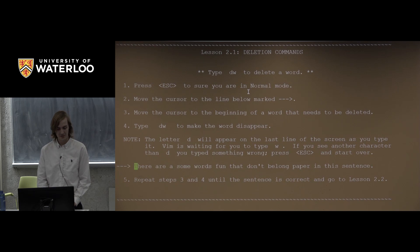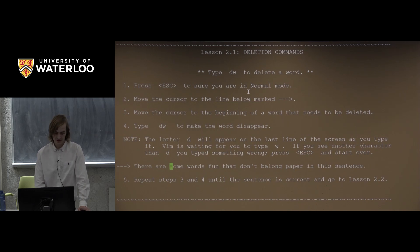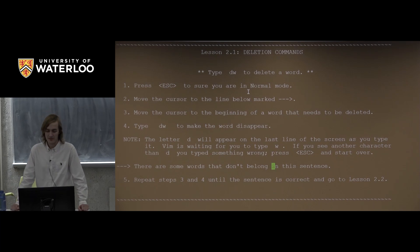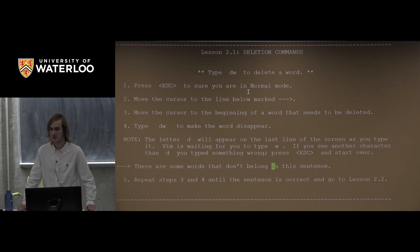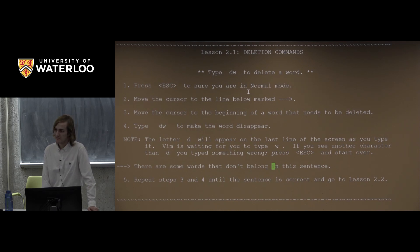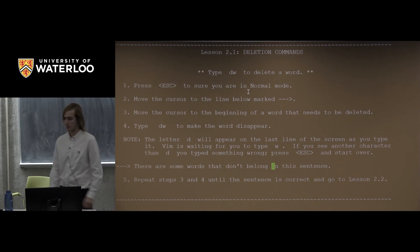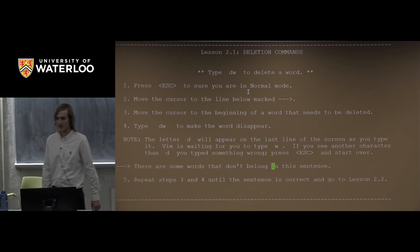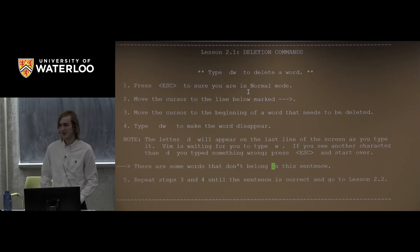So going down to a practice sentence, we want to delete all the words that don't fit. Using DW we can delete the extra words one by one, fixing the sentence without ever having to go into insert mode — which is important. And another strange thing: in Vim you never have to use the backspace key. Really all your deleting should be done from normal mode. I might even go so far as to say the backspace key is not proper Vim, though I haven't yet trained myself to stop using it.